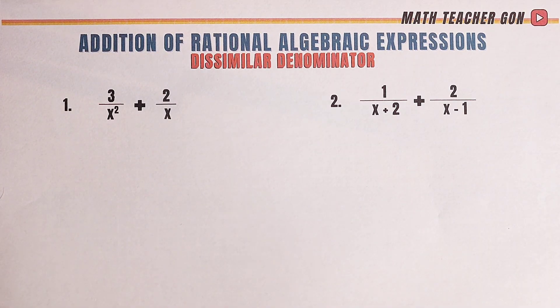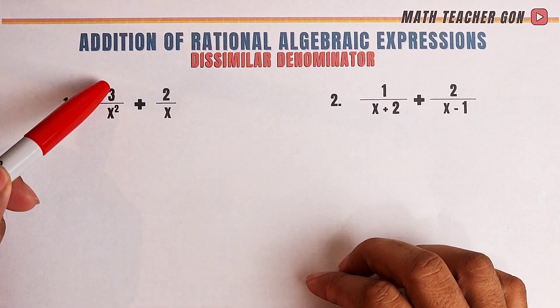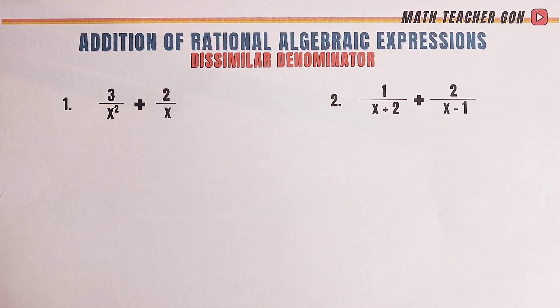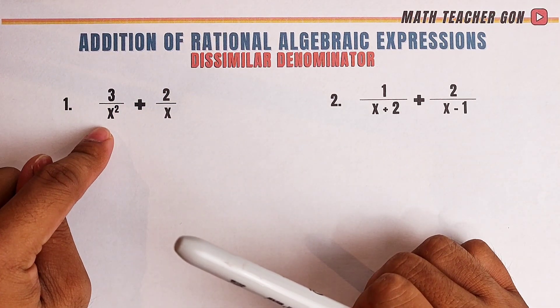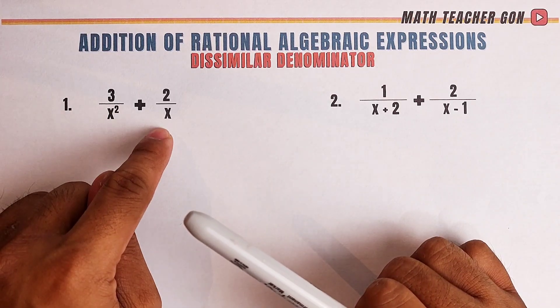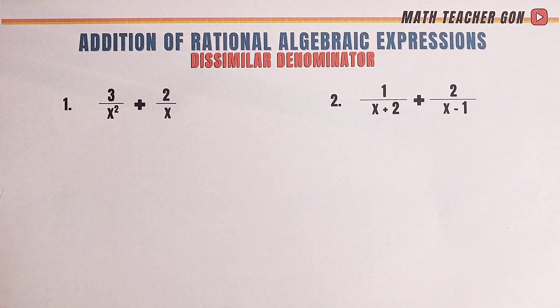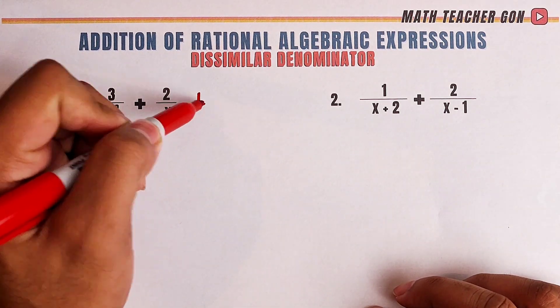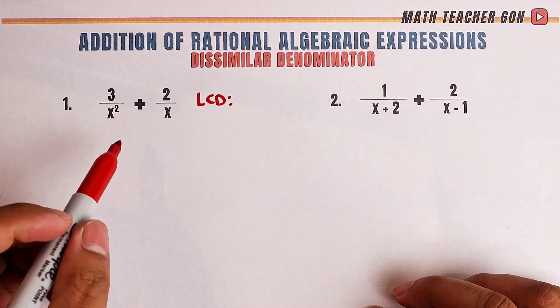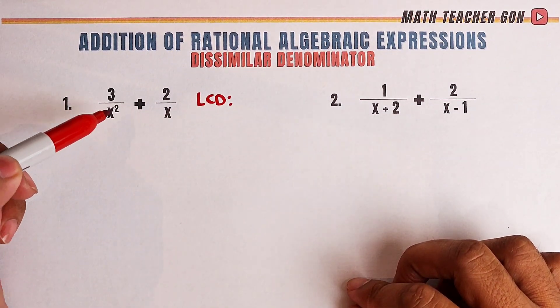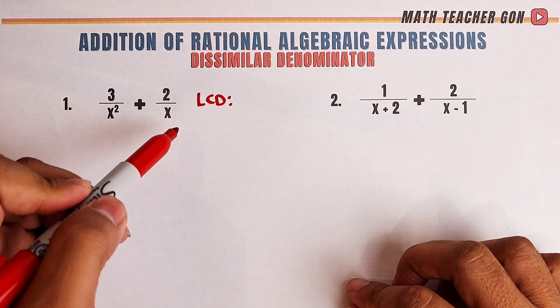Let's start with item number one. For number one, we have 3 over x squared plus 2 over x. So as you can see, the first denominator is x squared. The second is x. So what we need to do is to find first the least common denominator. So we need to know the LCD before we add the whole expression. Since this one is x squared and this is x.